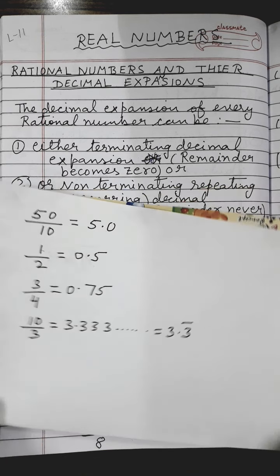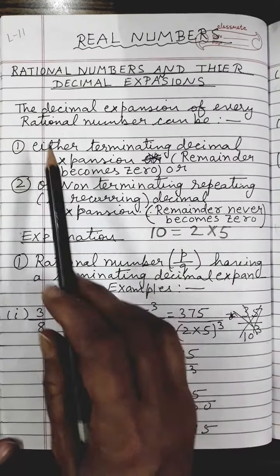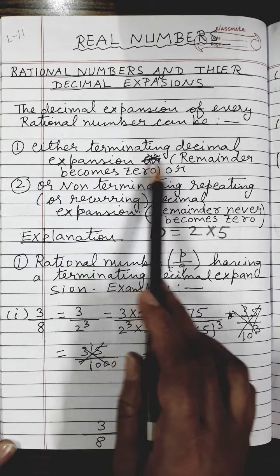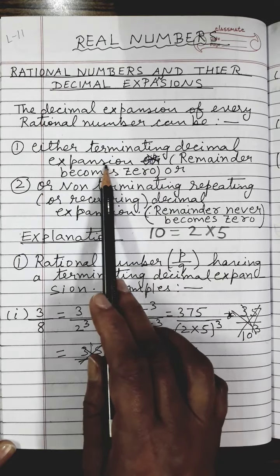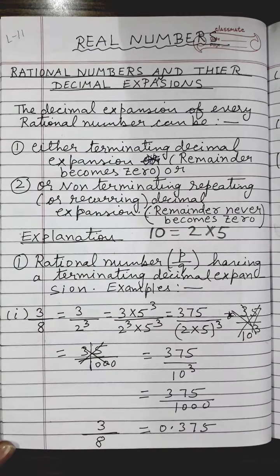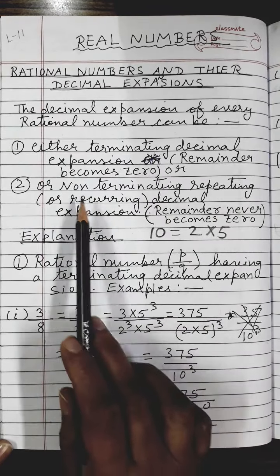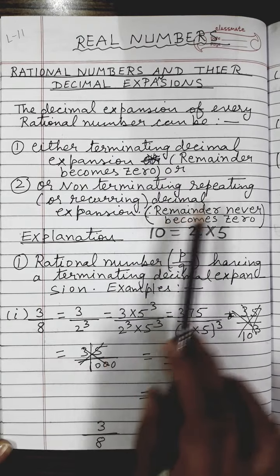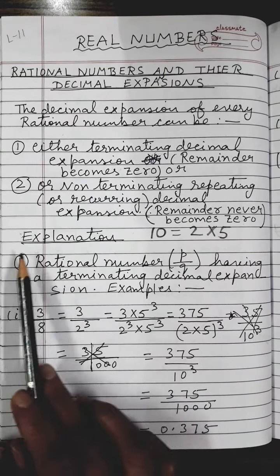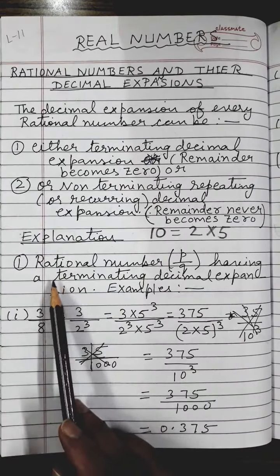So this is exactly what we mean by decimal expansion of a rational number. Now the topic is rational numbers and their decimal expansion. There are two types of decimal expansion: number one is terminating decimal expansion — where if I divide I will get the remainder as 0; and number two is non-terminating repeating decimal expansion, also called recurring — where the remainder will never be 0. Let us understand with examples.